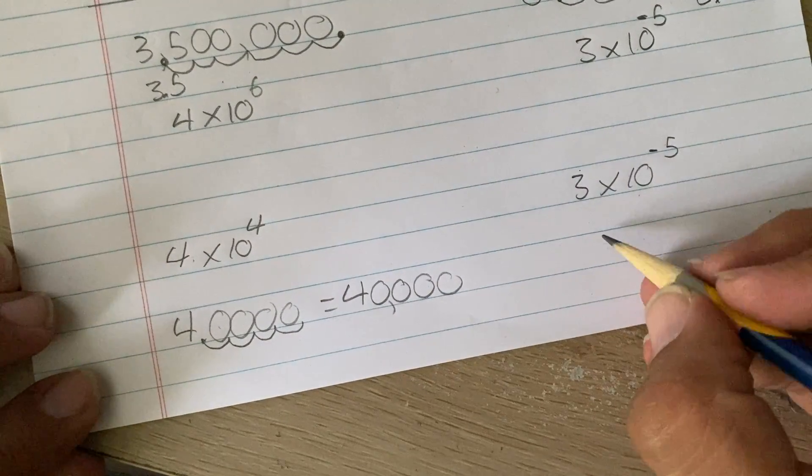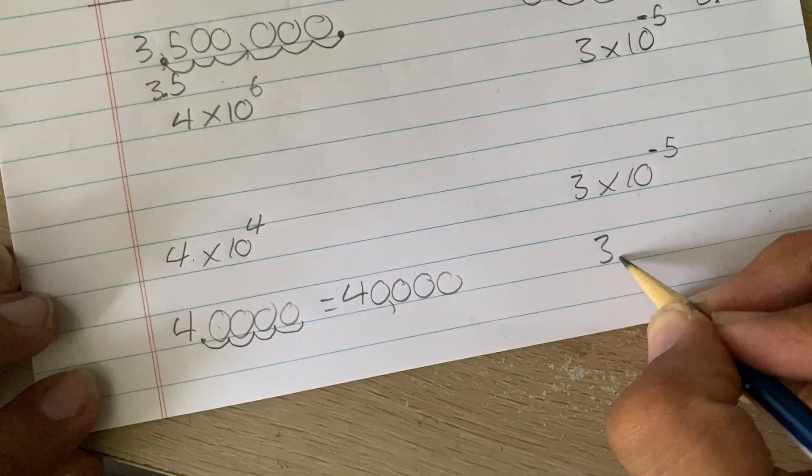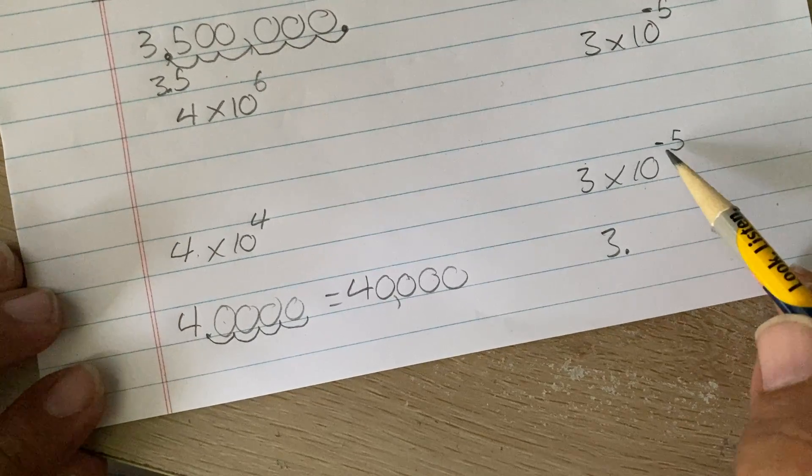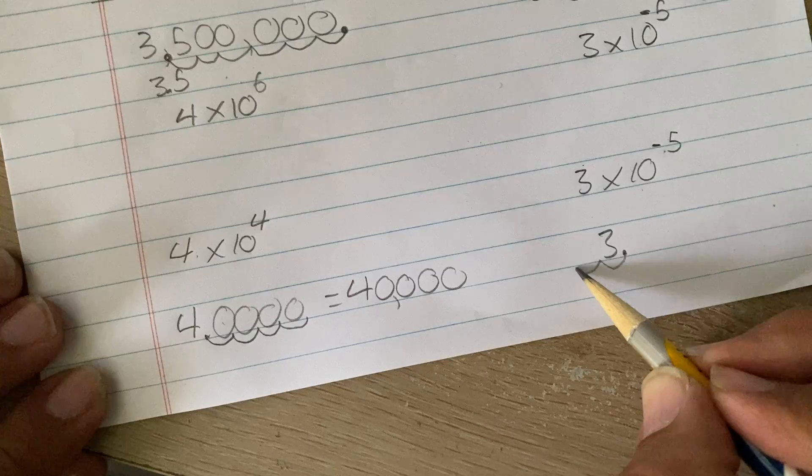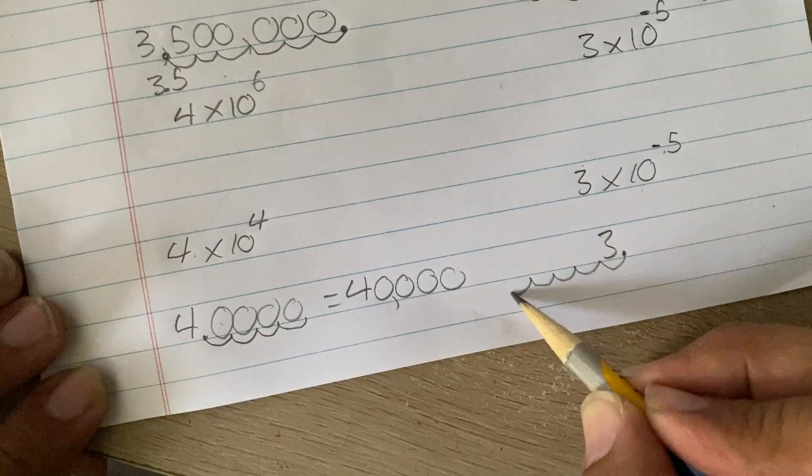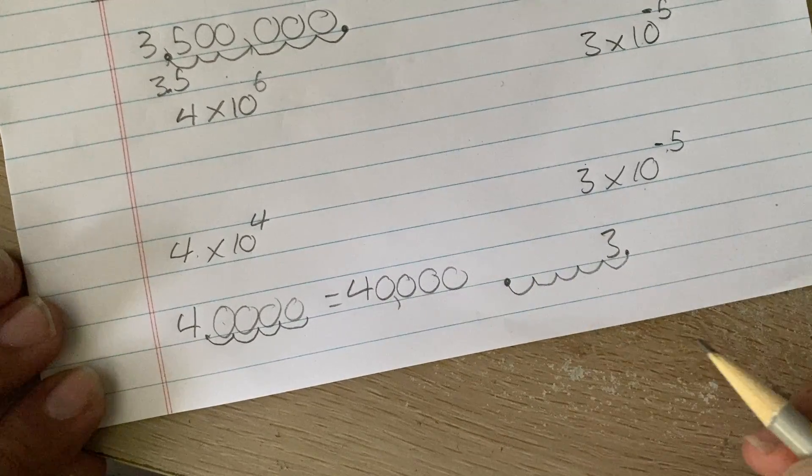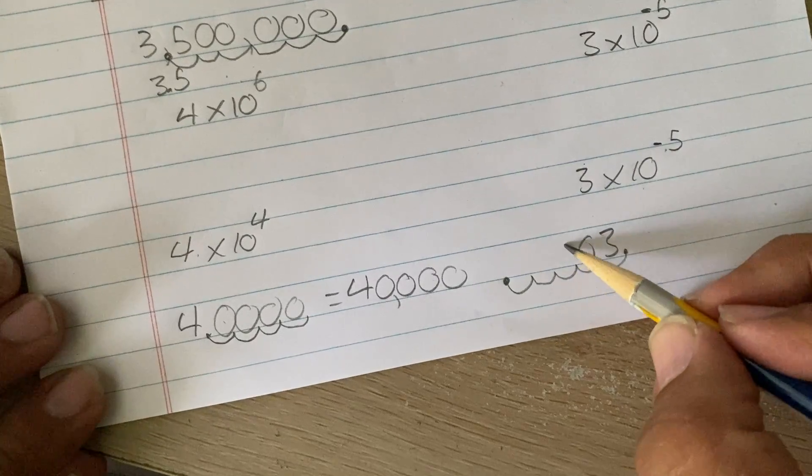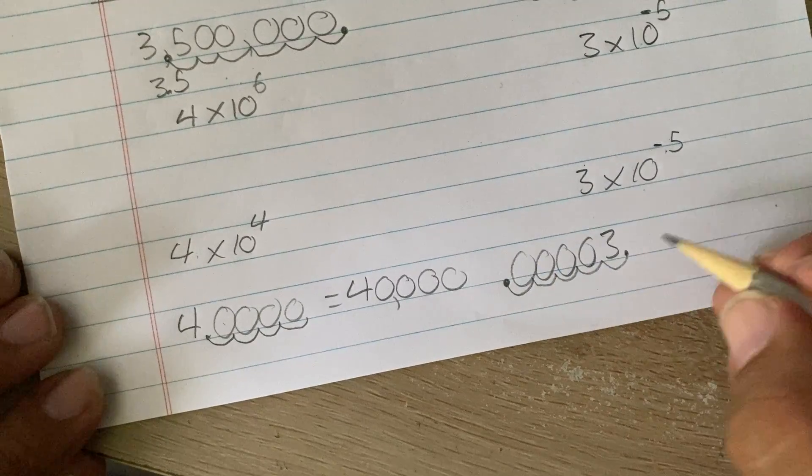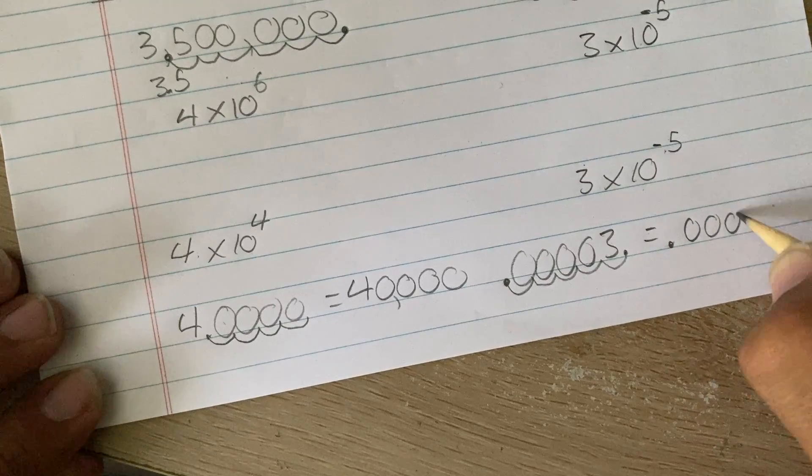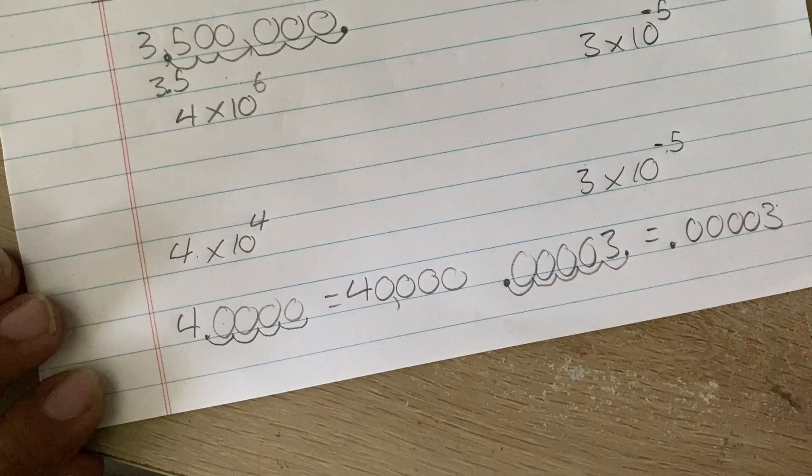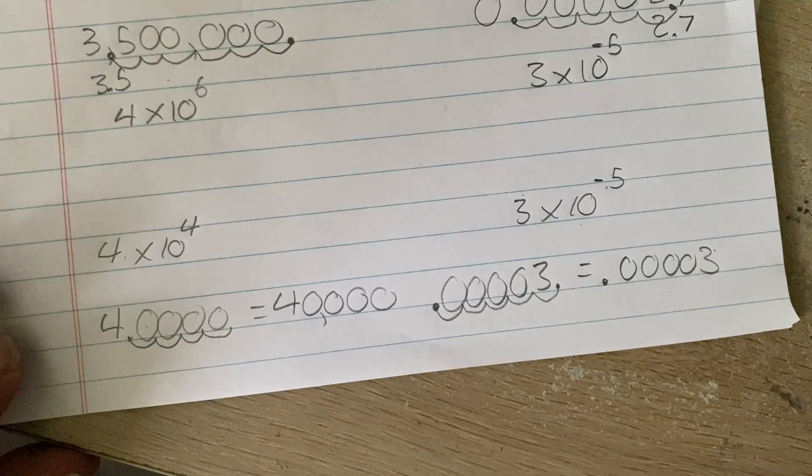Same thing here. I start with a 3. I know the decimal point is here. It wants me to make it smaller 5 times. So, 1, 2, 3, 4, 5. Smaller. So, now I fill in all these spots. So, now this is 0.00003 is my final answer. And that's it.